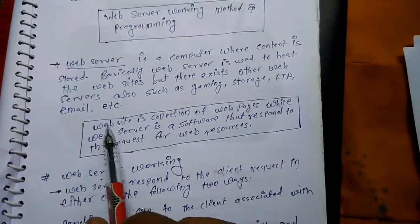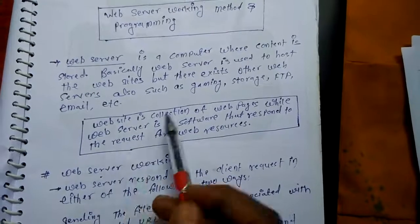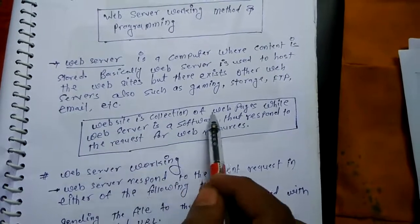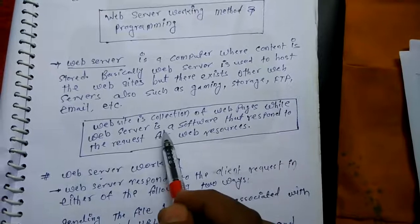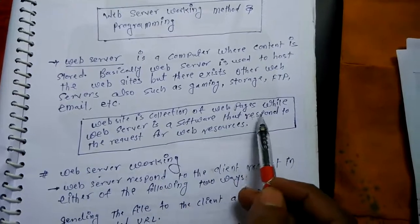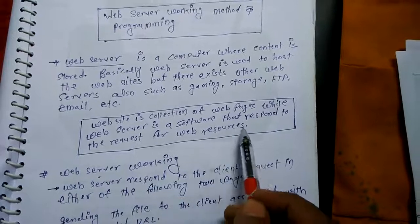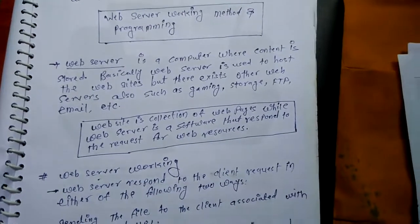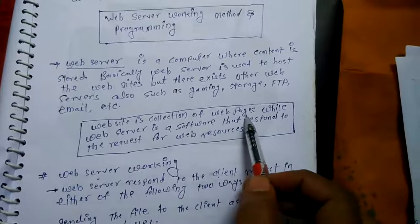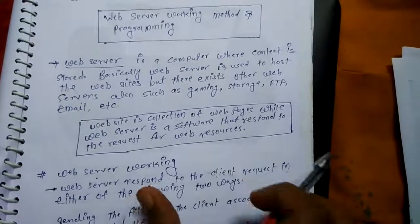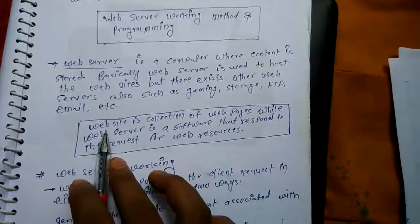So what is a website? A website is a collection of web pages, while a web server is software that responds to the request for web resources. Website collection of web pages — जो web में रहता है, website है।